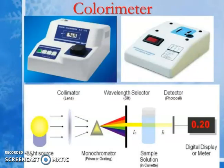The picture of a colorimeter shows its key parts: the light source, the colorimeter lens, the monochromator (prism and wavelength selector with slits), the incident light I₀, the transmitted light I, the sample solution, and the digital display or meter.